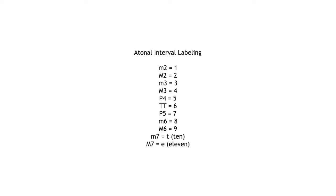I'm going to refer to intervals using their atonal terms — not perfect fourths, perfect fifths, major thirds, or minor thirds, which are tonal ways of talking about intervals. For example, a major third I would think of as a plus four, that is four equally tempered semitones. It's helpful to think that way because atonal music uses a different aesthetic. You want to get as good as you can with singing any interval from any pitch, and a good way to do that is just to practice them a lot.